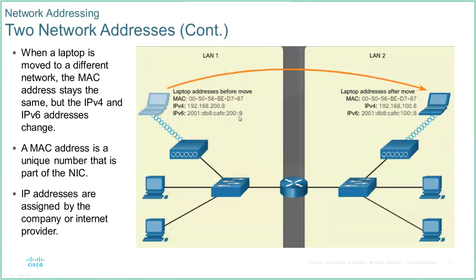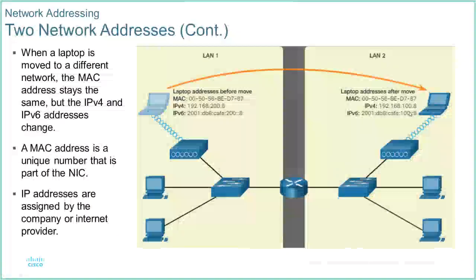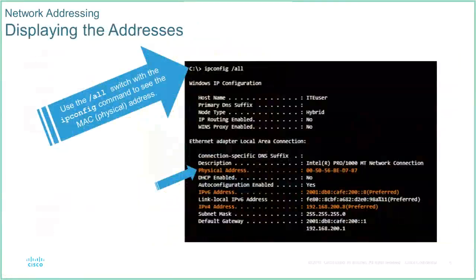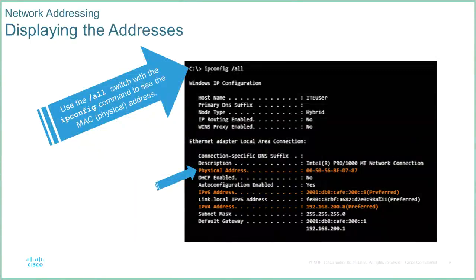We'll look at the rules around how we can shorten IPv6 addresses to make them easier to write. Basically we need a physical address and a logical address to send information from a source to a destination, regardless of whether we use IPv4 or IPv6. One way to determine our physical and logical addresses on our host machine is using the command 'ipconfig /all' in a command window.